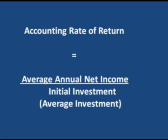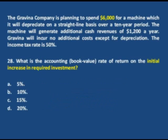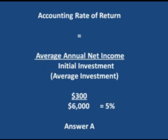Let's go back to Gravina now. Gravina is going to invest $6,000. The income is going to be $300. Watch the question: what is the accounting rate of return on the initial increase in required investment? The initial increase in required investment is $6,000. So going back to our formula, the accounting rate of return is the average annual income of $300 divided by the initial investment of $6,000.